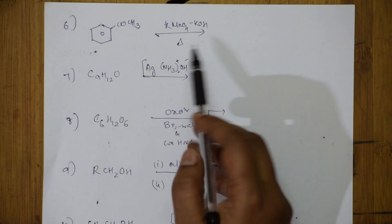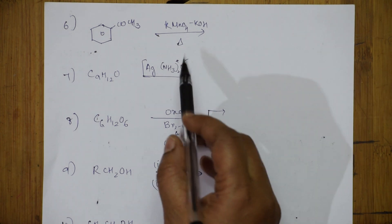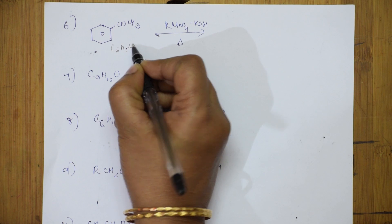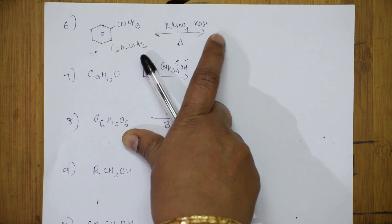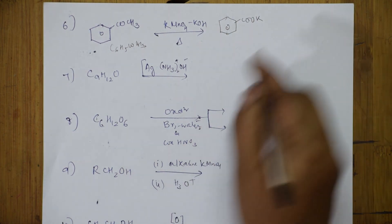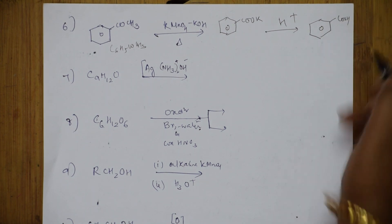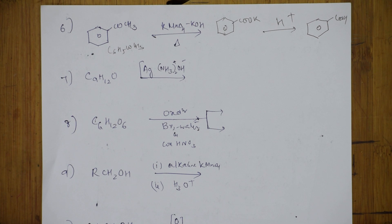The next reaction: on the arrow you have KMnO4, which is an oxidizing agent. But along with KMnO4, they've given a base (KOH) — this is where you have to be careful. The compound is acetophenone (C6H5). Whenever you have these two agents together, first a salt is formed — potassium benzoate. Then when this potassium benzoate is treated with acid, it becomes benzoic acid. Remember: when KOH is present, first form potassium benzoate, then convert to benzoic acid.